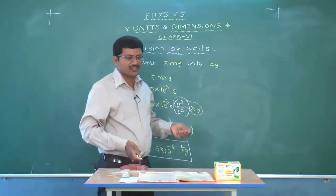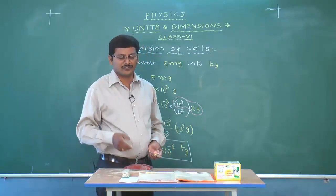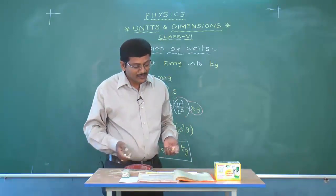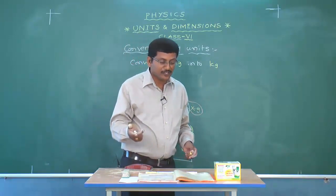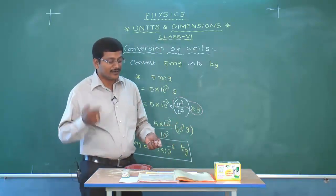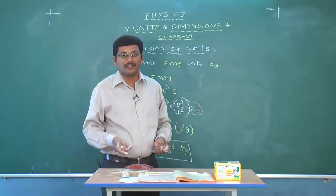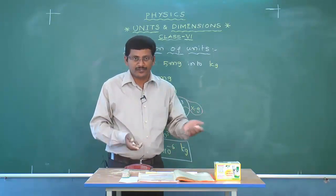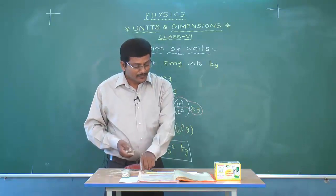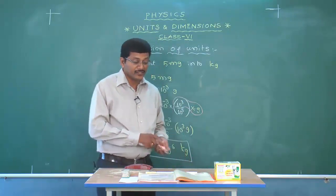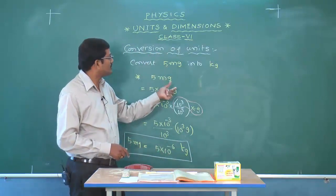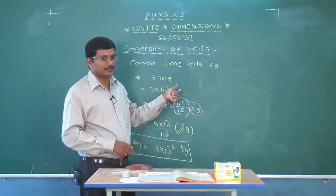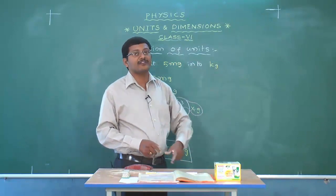This is the method of conversion — whether conversion of units in length, mass, or time, we use the same technique. For example, 32 seconds converted into milliseconds: first convert the 32 seconds, then introduce the fraction 10 to the power of 3 over 10 to the power of 3, take the needed fraction, and convert into the required units. Conversion of time is left as home practice.